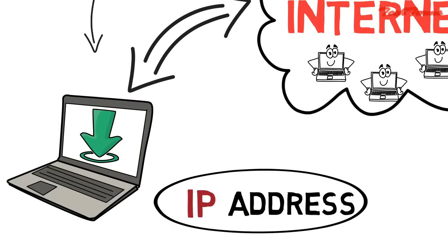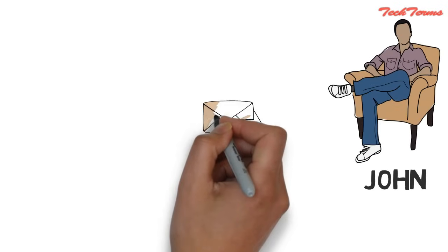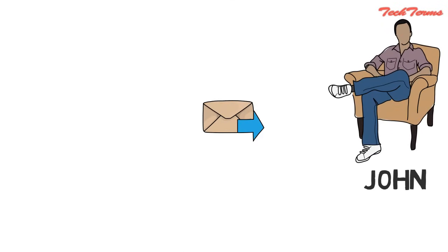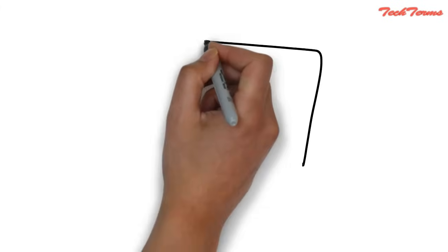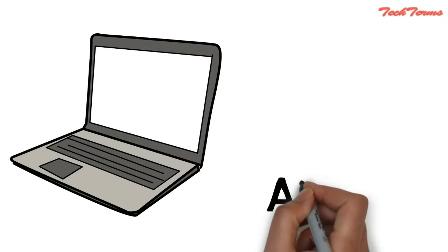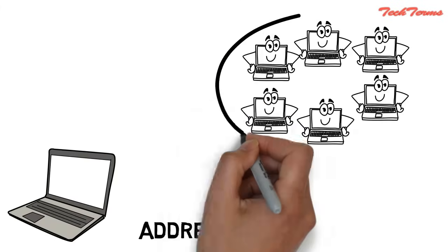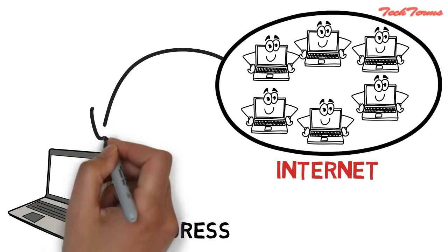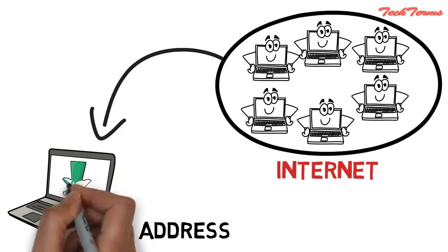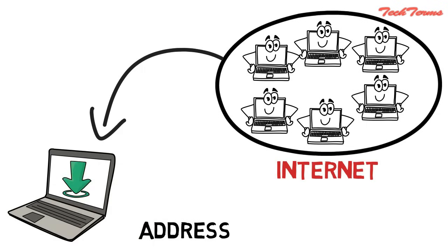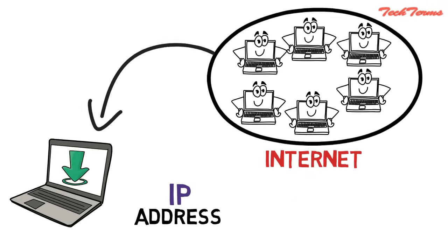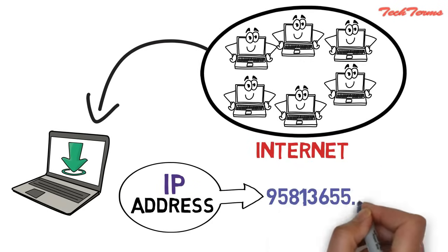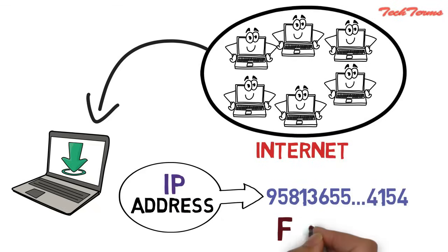Let us understand it with another example. If someone wants to send you a mail, then he or she should have your home address. Similarly, your computer also needs an address so that computers on the internet can send you a file that you want to download. That address in internet terms is called an IP address, which is nothing but a string of numbers written in a certain format.